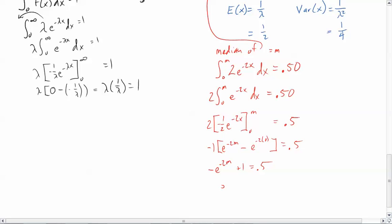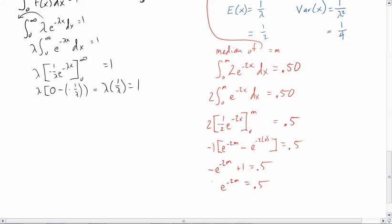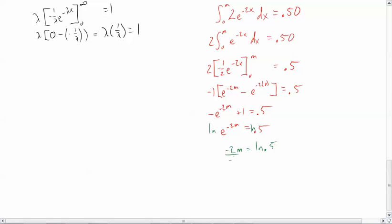Subtract the 1, multiply by a negative. I now have e to the negative 2m equals 0.5. Take the natural log of both sides, so I go 0.5 natural log, which is negative 0.693, divide by the 2, negative 2, divide by 2, and I get 0.346 as m. All right, so remember all I did here was I took the natural log of both sides, which then gave me negative 2m equals natural log of 0.5, and then we divided by negative 2, which gave me m equals my final answer of 0.347.